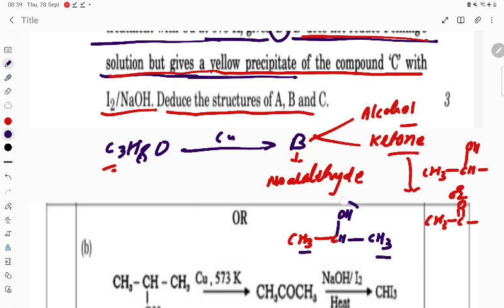Three carbons, eight hydrogens, OH. This can be the compound. It will give the iodoform test. So A, B, C - A is what?